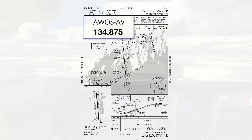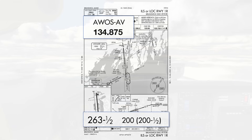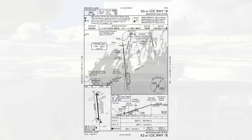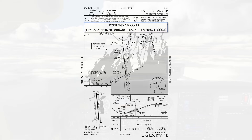We'd make sure the weather is better than the ILS minimums: 263-foot ceilings and one-half mile of visibility. We're talking to Portland Approach on 119.75. This is our final controller, which we know by finding this frequency in the Approach control box. It applies to the area between 112 degrees and 292 degrees from the field, where we're coming from.